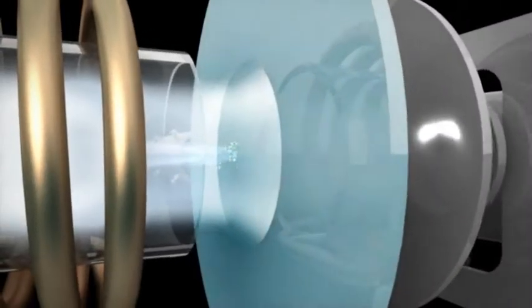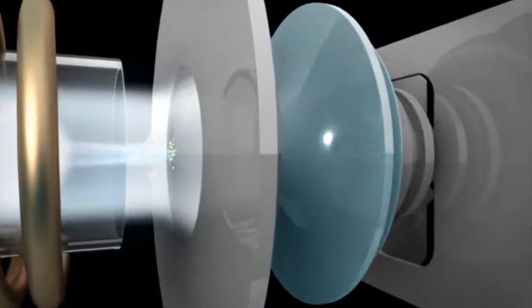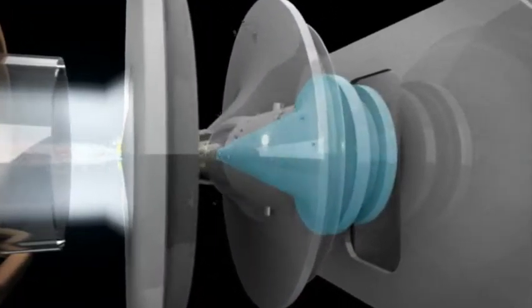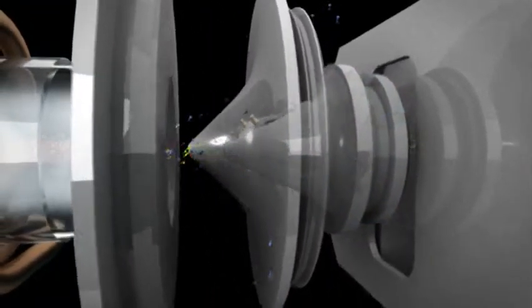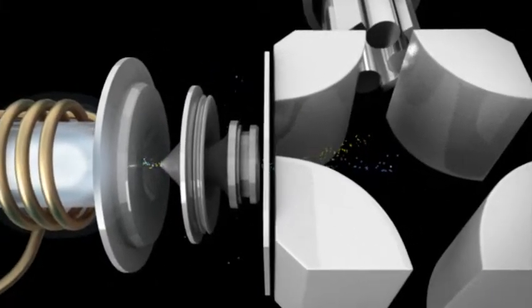Positively charged ions are then drawn through a sampler cone, a skimmer cone, and a unique hyper-skimmer cone that remove unionized material more effectively than typical two-cone instruments.